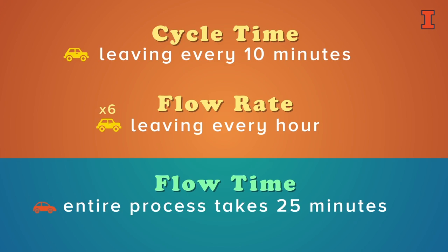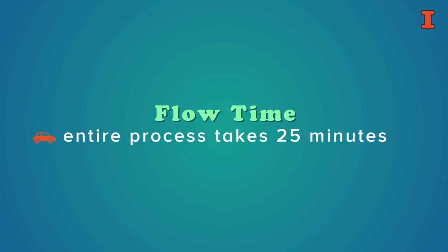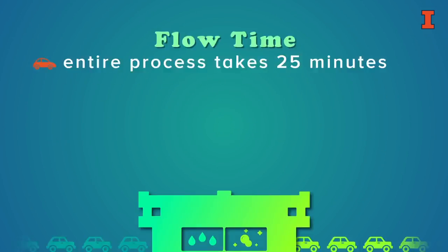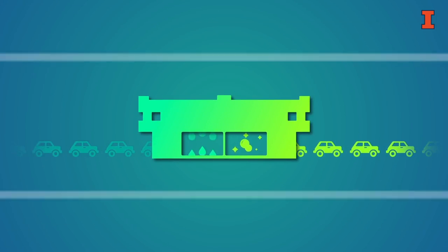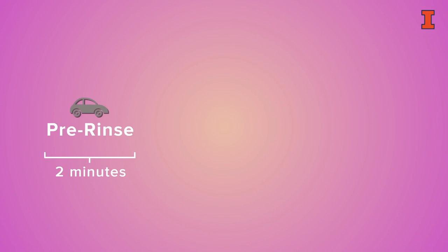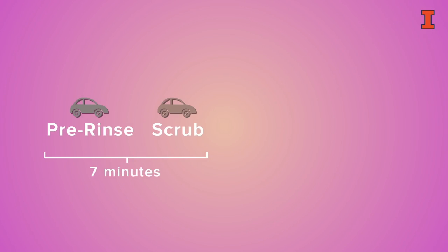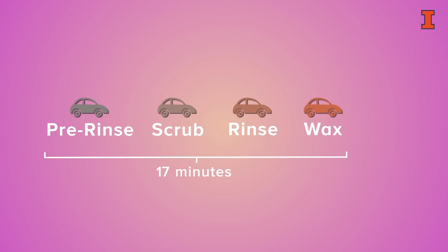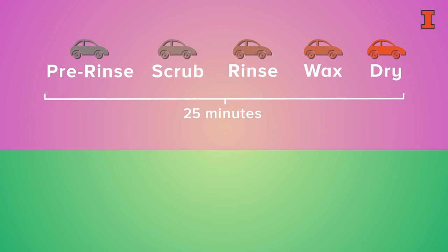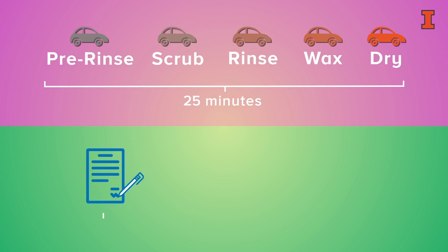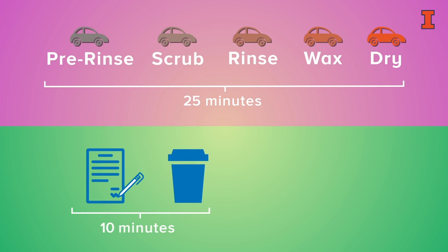Now if we look at what was going on during those 25 minutes inside the car wash, we have a pre-rinse area, a scrubbing area, a rinse, a wax, and then a dry. While the car is going through this process, the driver has to get out, sign a waiver, go have a cup of coffee, and then pay.